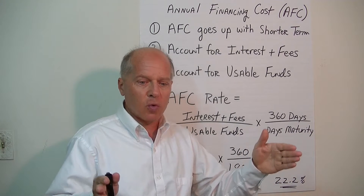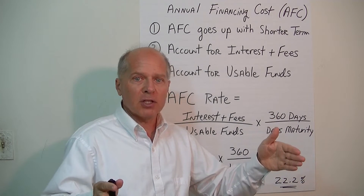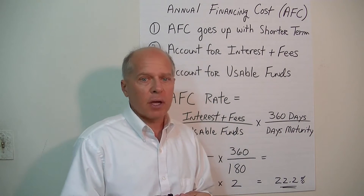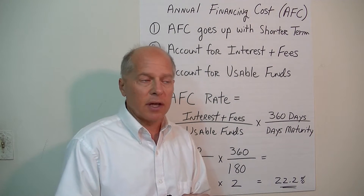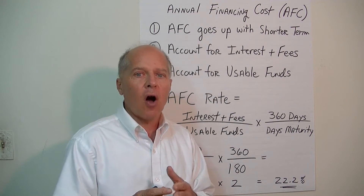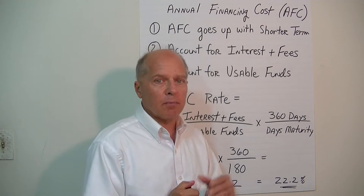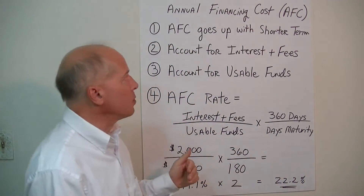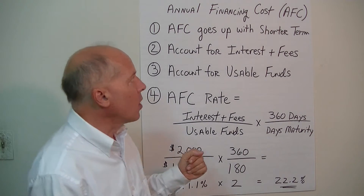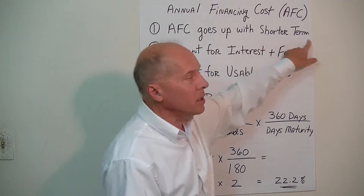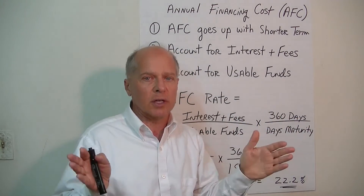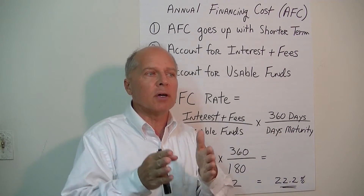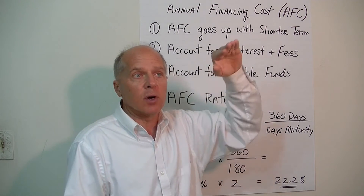So if we borrow money for 12 months, that's the benchmark or standard we use to measure all of our short-term borrowing at the bank. Sometimes we may borrow money for 3 months, 6 months, or 9 months — we'll calculate all of this on an annualized basis to come up with the AFC. And what we'll notice is that as we get shorter and shorter terms of maturity — from 9 months to 6 months, or from 6 months to 3 months — the annualized financing cost will go up dramatically.